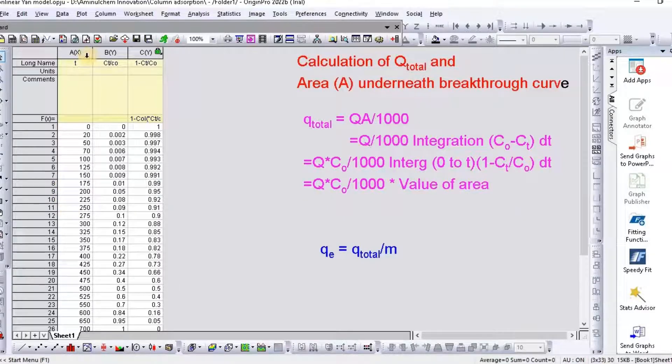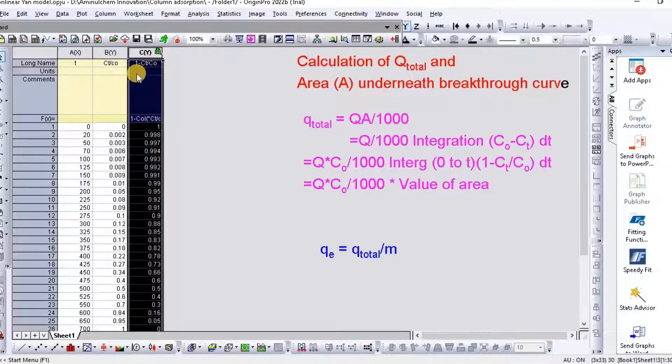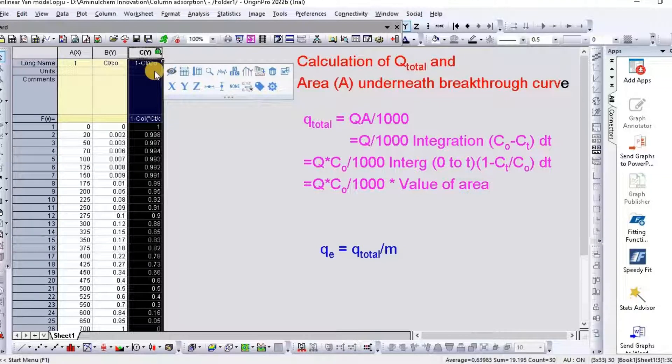So in order to fit, I have taken data for T and Ct by C0, then I have already converted 1 minus Ct divided by C0.